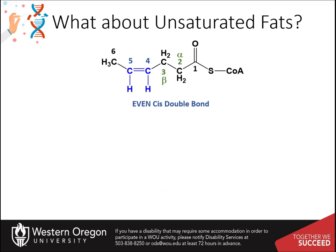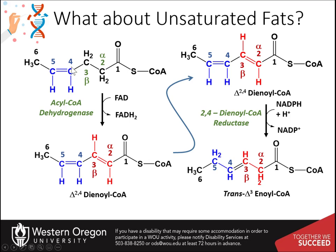With the even double bonds, two enzymatic steps are required. When the cis double bond reaches the 4-5 position, it still does not hinder the action of the first enzyme in the beta oxidation pathway. The acyl-CoA dehydrogenase enzyme still recognizes this substrate and will generate a trans double bond between the alpha and beta carbon positions. However, the hydratase in the second step cannot recognize the dienoyl intermediate that is created.